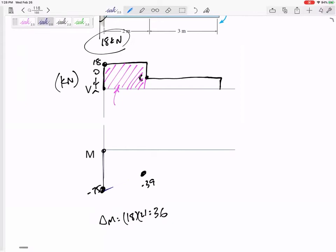And then do I go straight? Do I curve like that? V is the slope of M. V is the slope of M. So my slope is 18. My slope is 18. So this was a linear, straight line from negative 75 to negative 39. Okay?